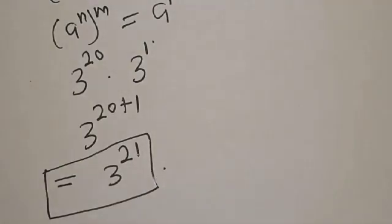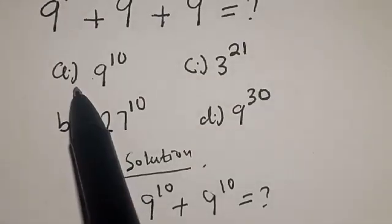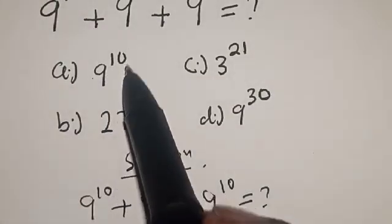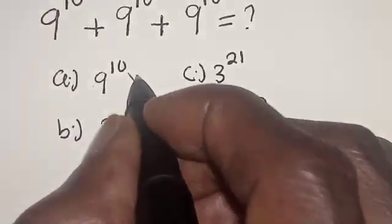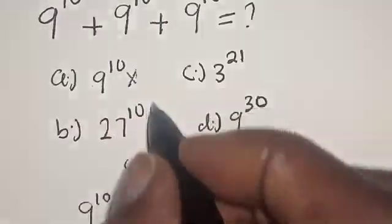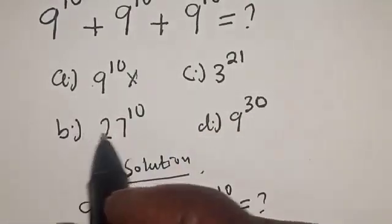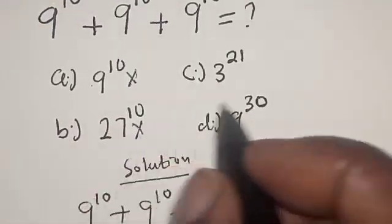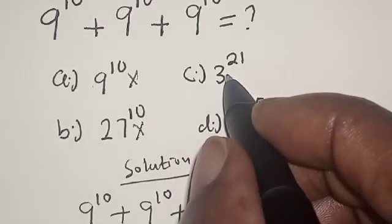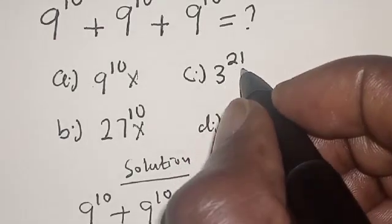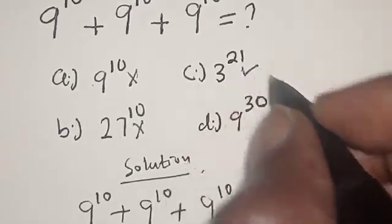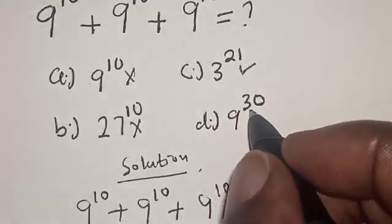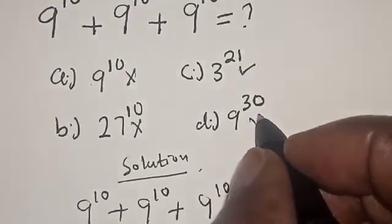Let's check our options to know the correct one. Option A is 9 raised to power 10 — no. Option B is 27 raised to power 10 — no. Option C is 3 raised to power 21 — yes. Option D is 9 raised to power 30 — no.